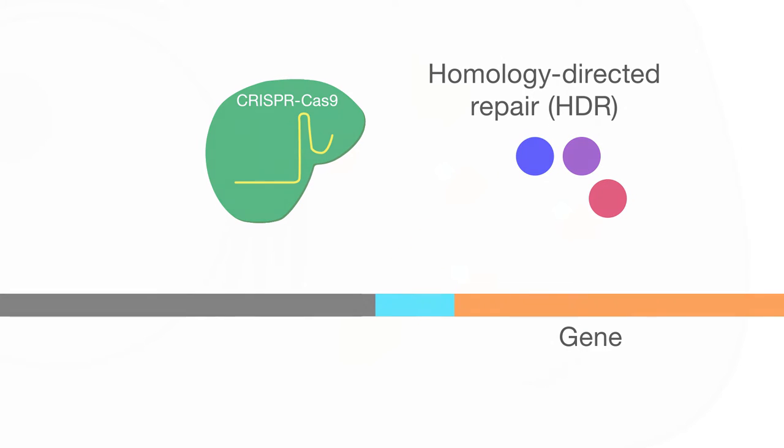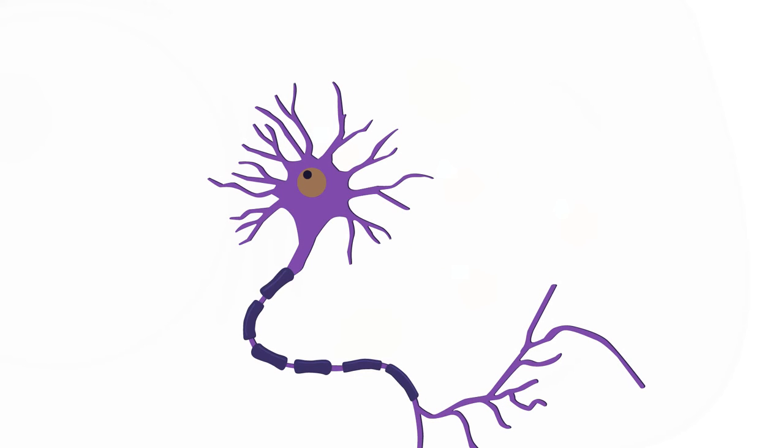The use of CRISPR-Cas9 in the brain, however, has been limited by the lack of the HDR mechanism in mature, non-dividing neurons and the inability to efficiently deliver the necessary machinery to the desired cells.